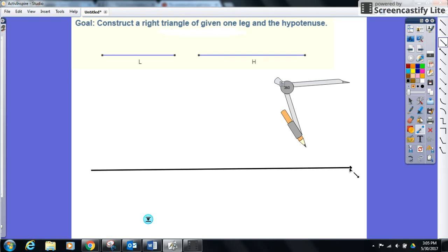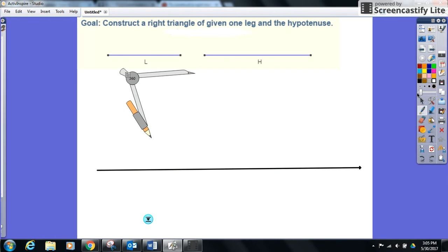It can be a line segment or a line, does not matter, just make sure it is a decent size. Second step: we are going to put a random point on this ray, segment, line, whatever you decided to create.